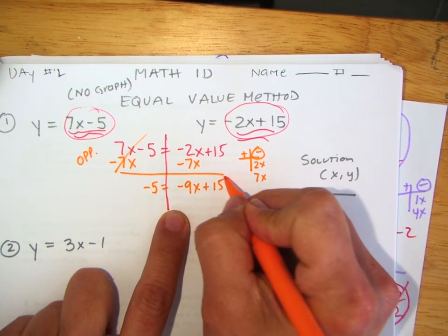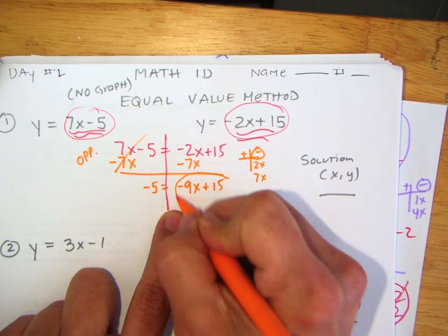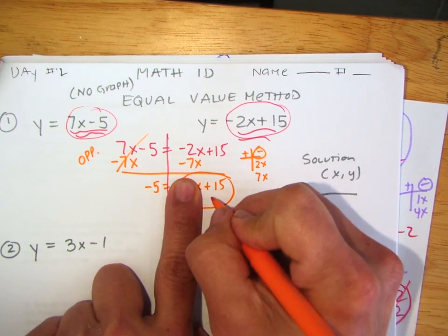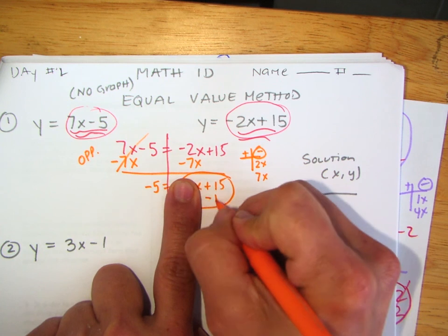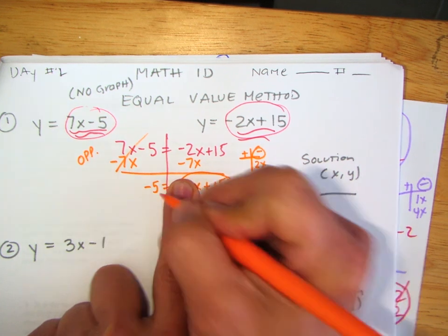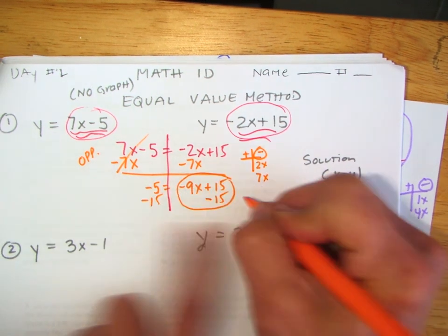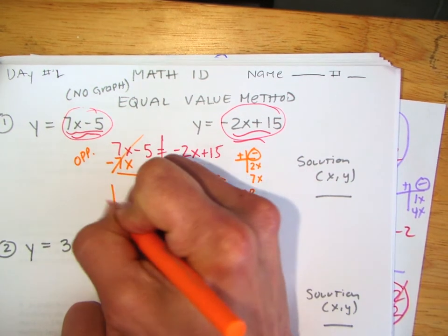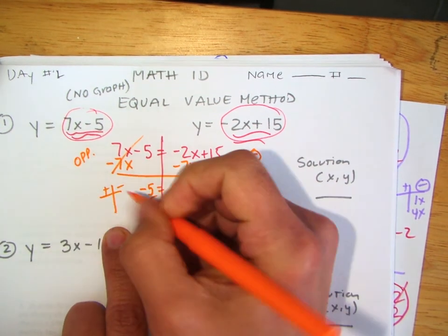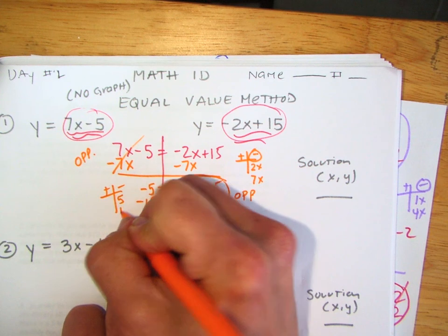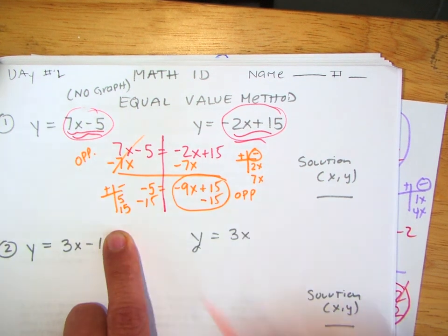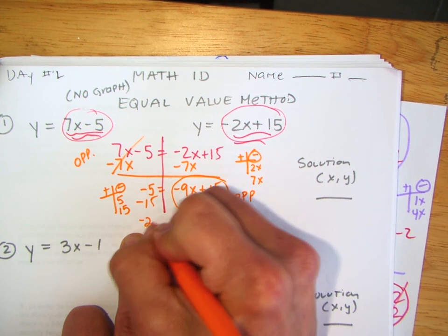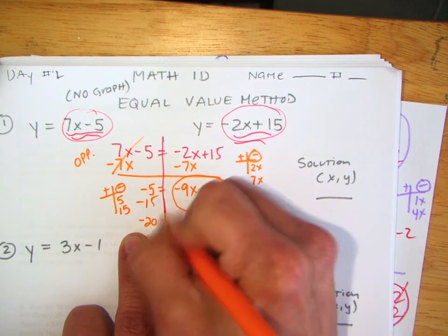I want to do a zero pair on this side because I want to isolate the variable. So I need to get rid of the 15, minus 15. I did opposites on this side, so on this side I got to do my T-chart. Negative 5 minus 15 gives me negative 20.